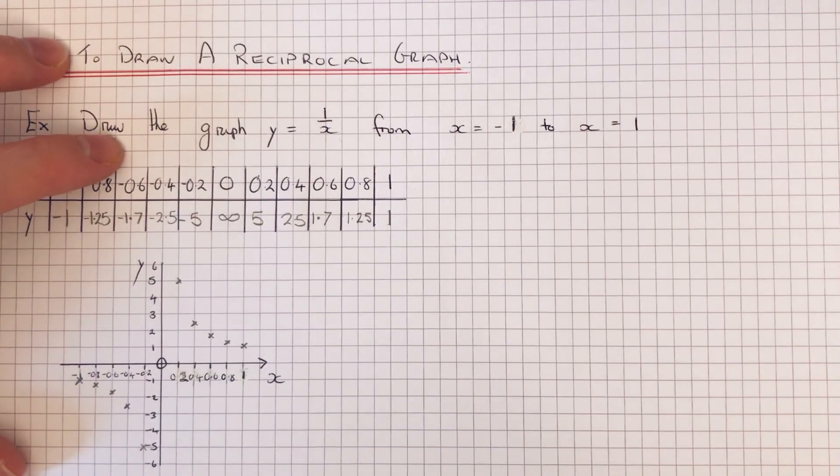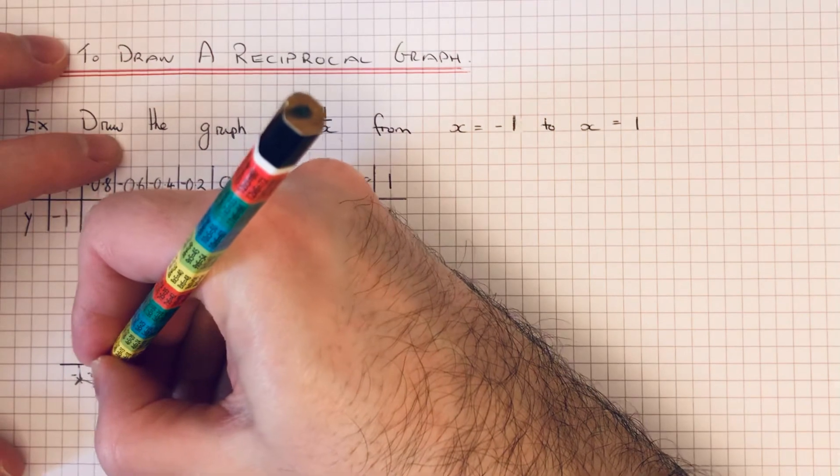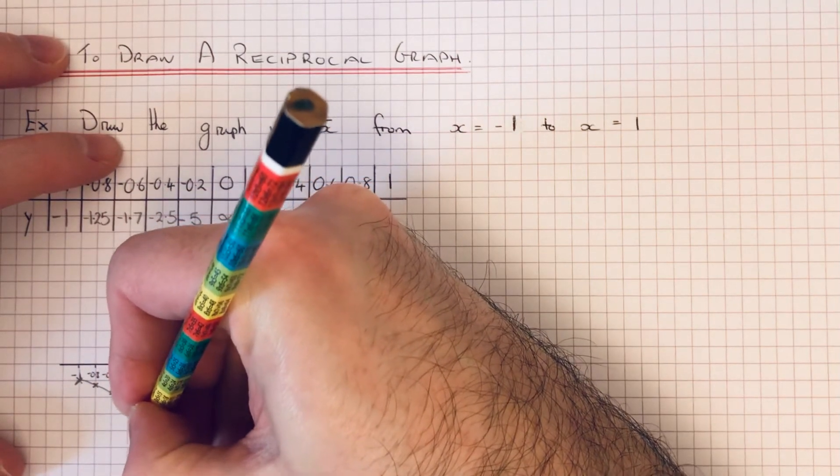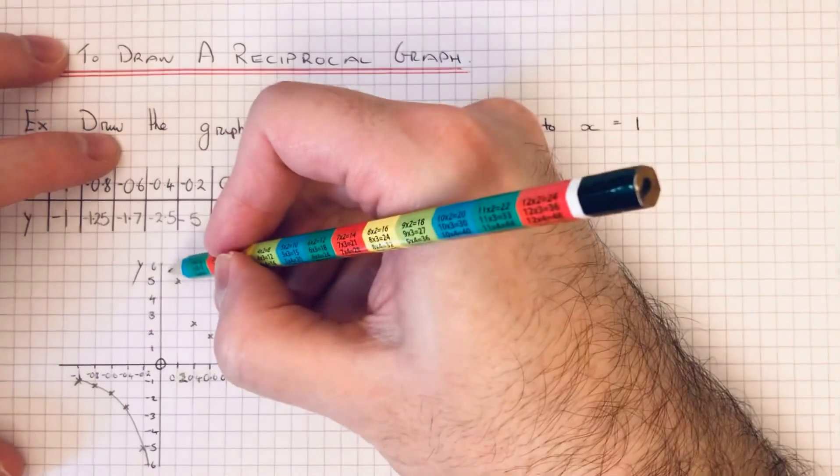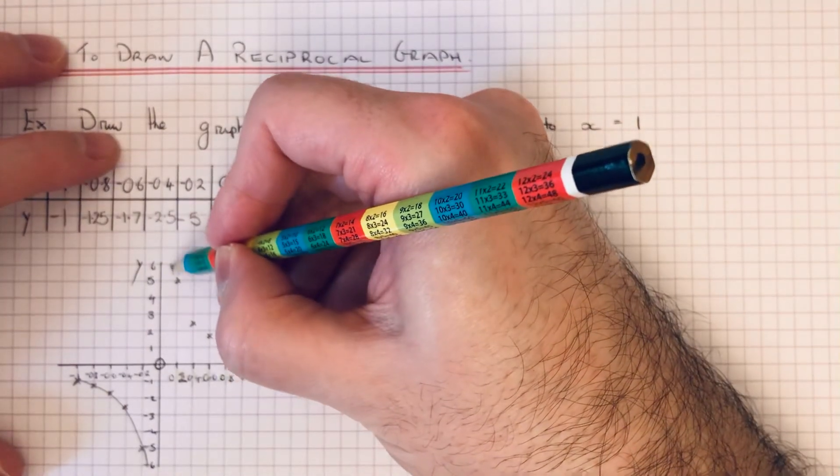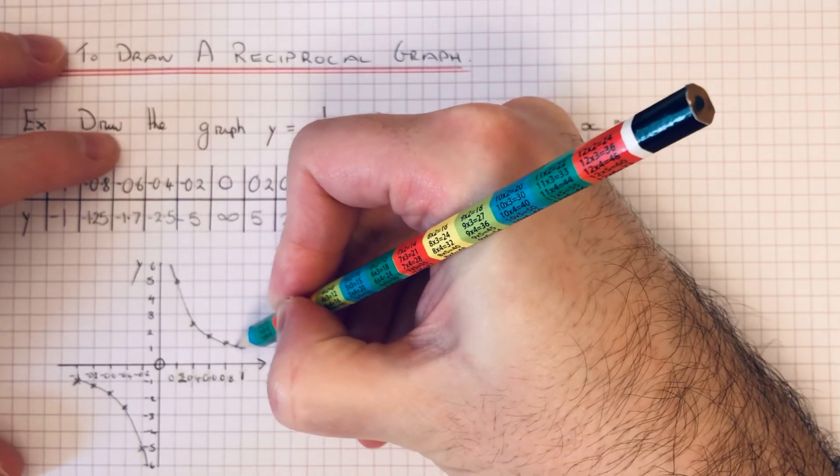And then all we need to do then is do two curves. So our first curve will be like that, so it is converging to the y-axis it won't cross the y-axis, and there's our second one.